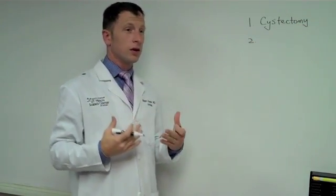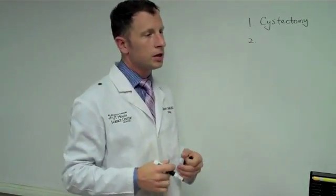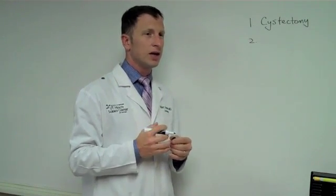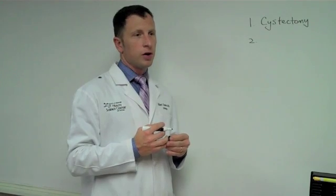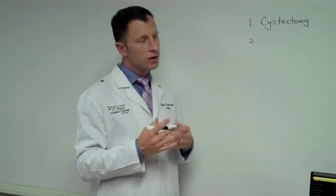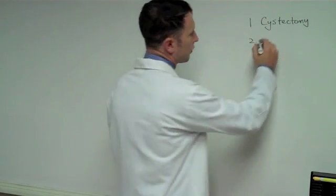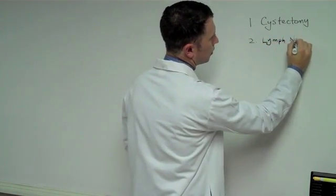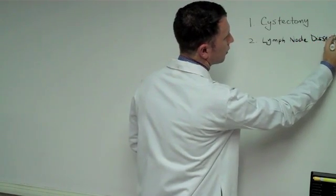After we remove the bladder, then we'll take out lymph nodes. Lymph nodes are present everywhere in the body, but in the pelvis and the region around the bladder, we take those out to see if the cancer has spread there, and maybe it provides some therapeutic value as well. So it's diagnostic and possibly beneficial for the patient. So that part is called the lymph node dissection, which is really just removing the lymph nodes.